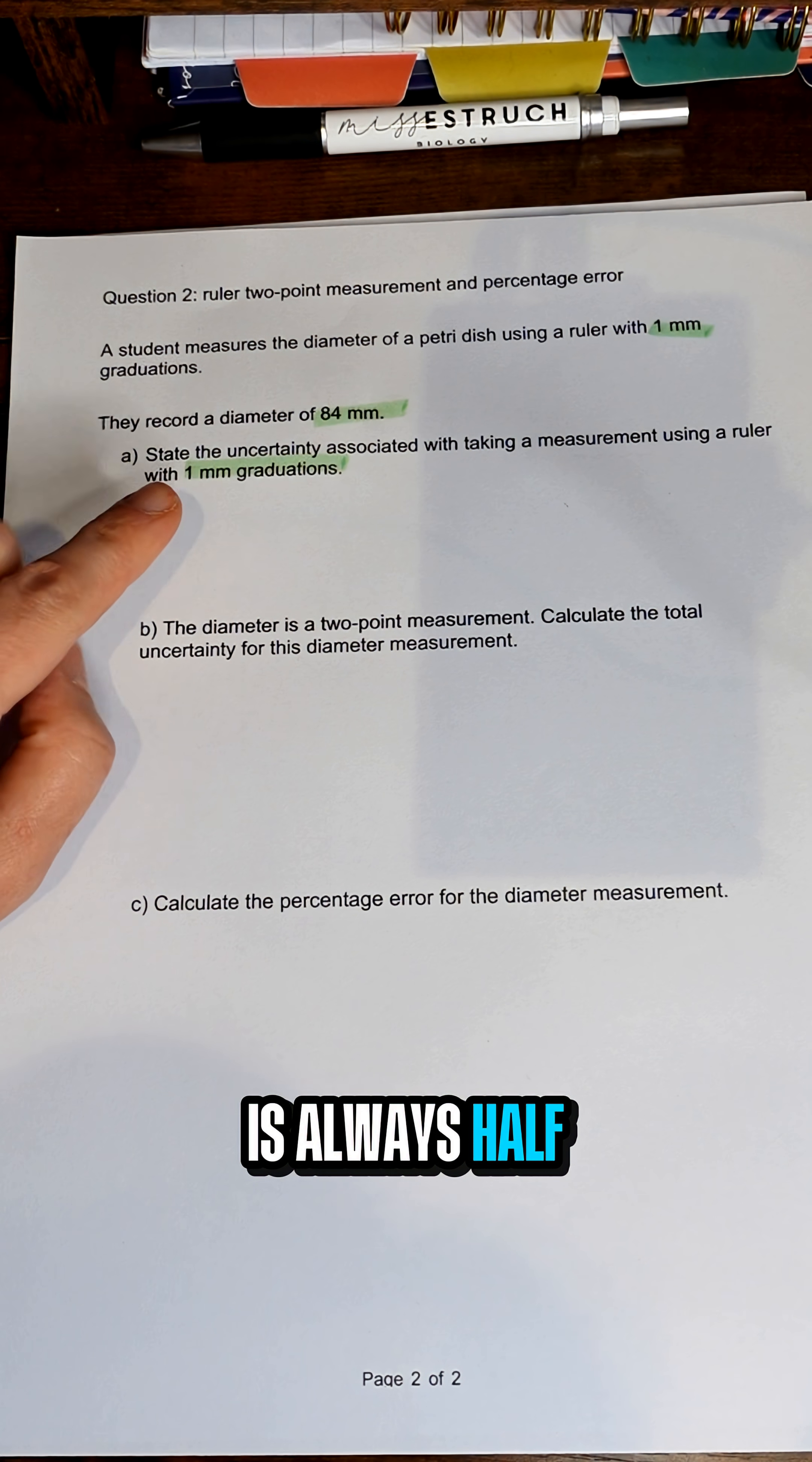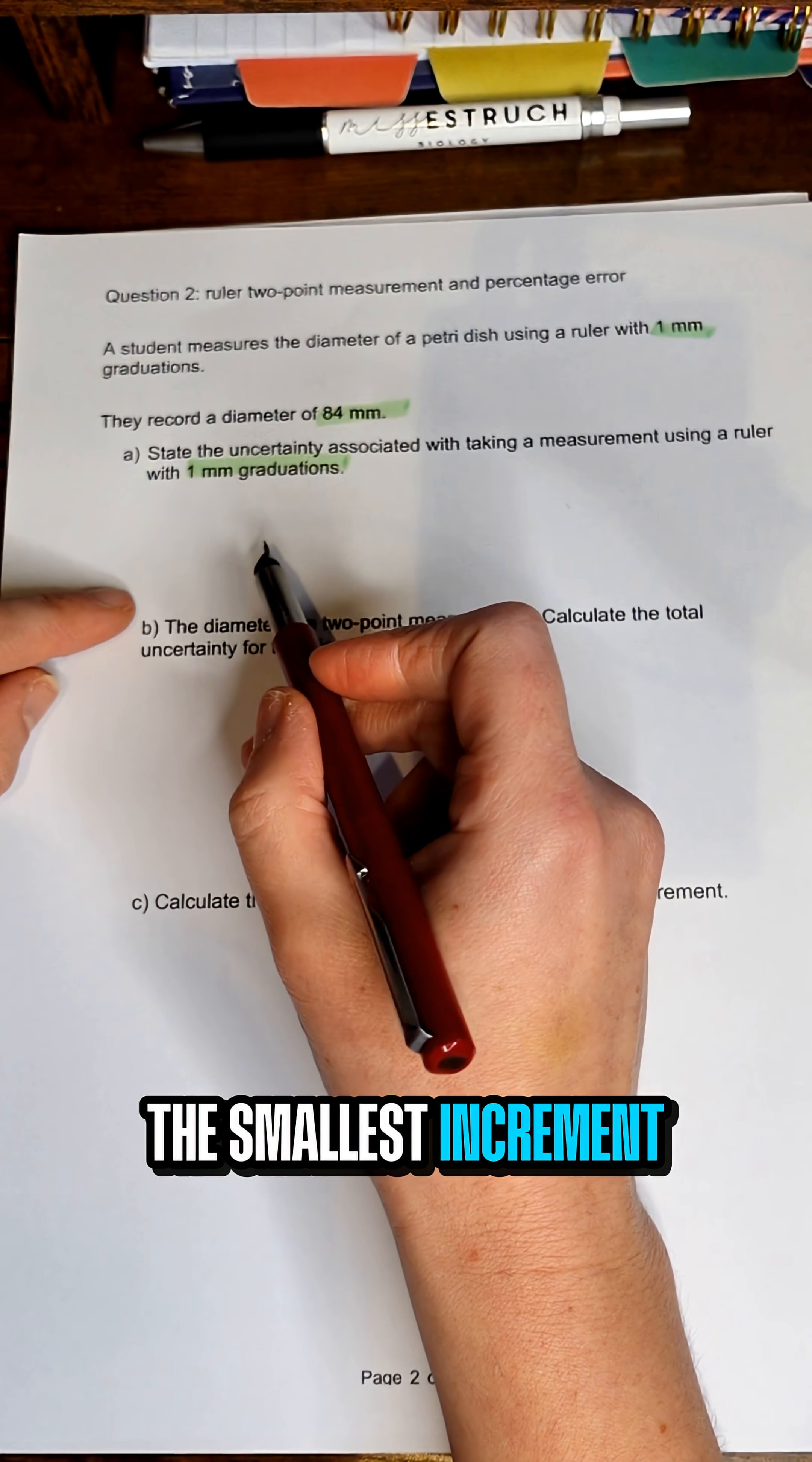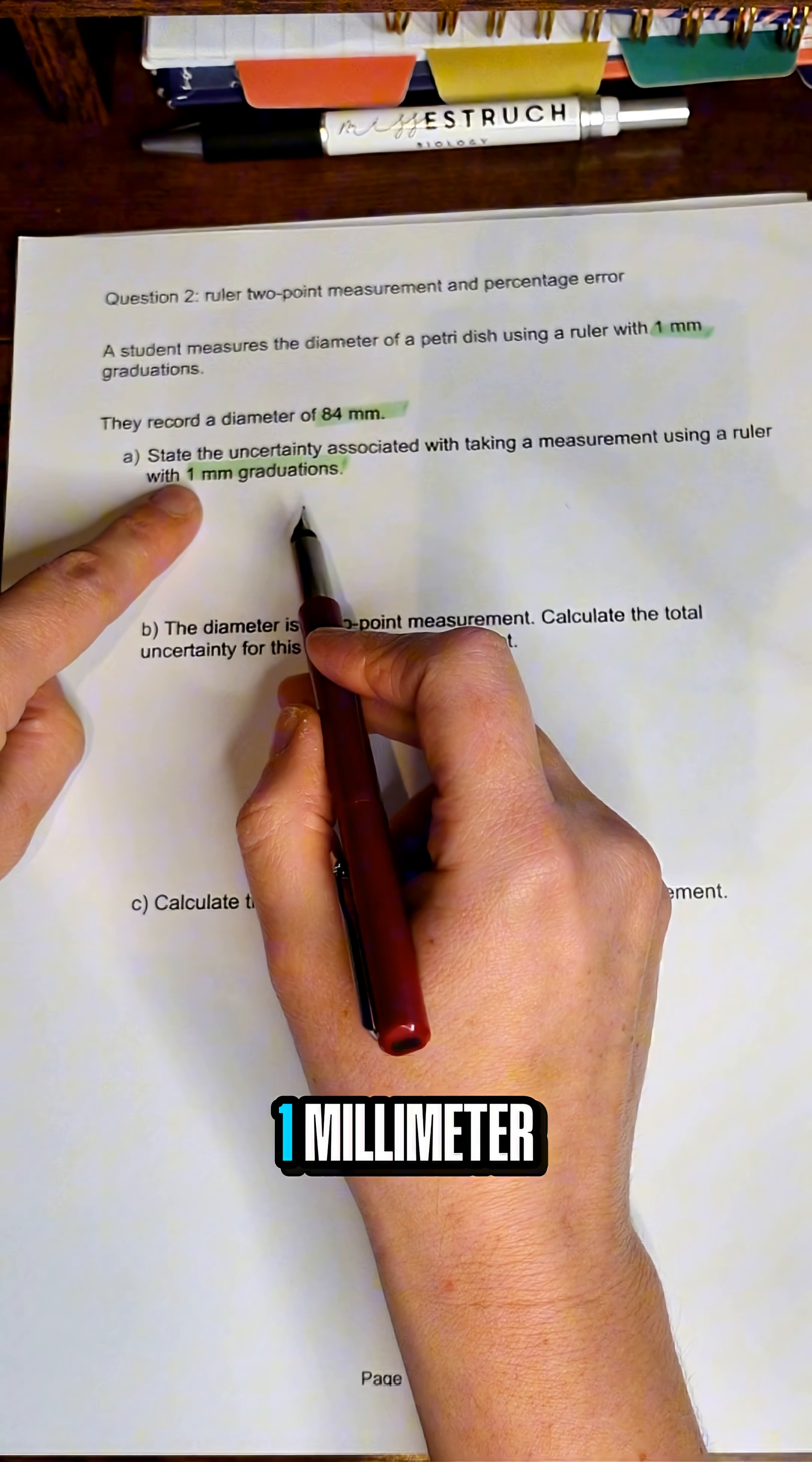Now your uncertainty is always half of the smallest increment on your piece of apparatus. The smallest increment here is one millimeter, so it would be half of one millimeter.